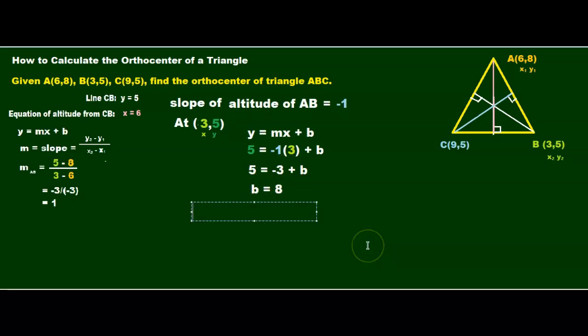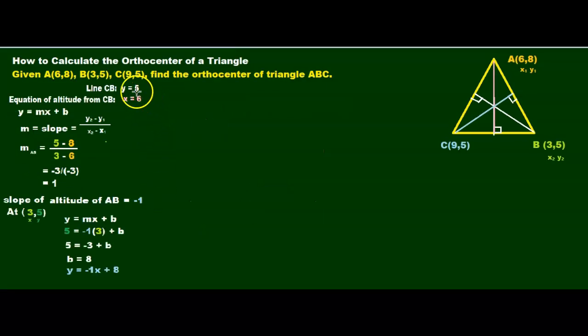That gives us B equals 8. Therefore, our equation of the line is Y equals negative 1X plus 8. Now we have equations of two altitudes. The pink one, which is X equals 6, and the blue one, which is Y equals negative X plus 8.